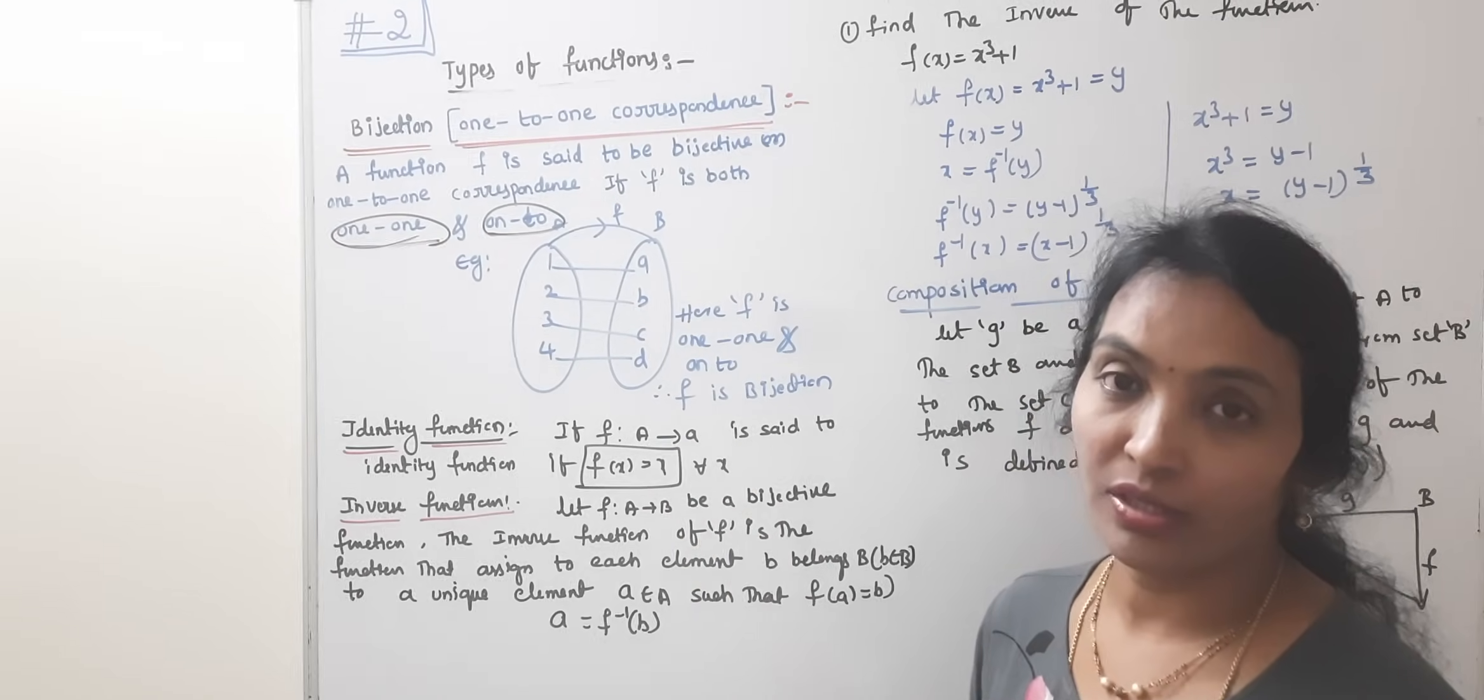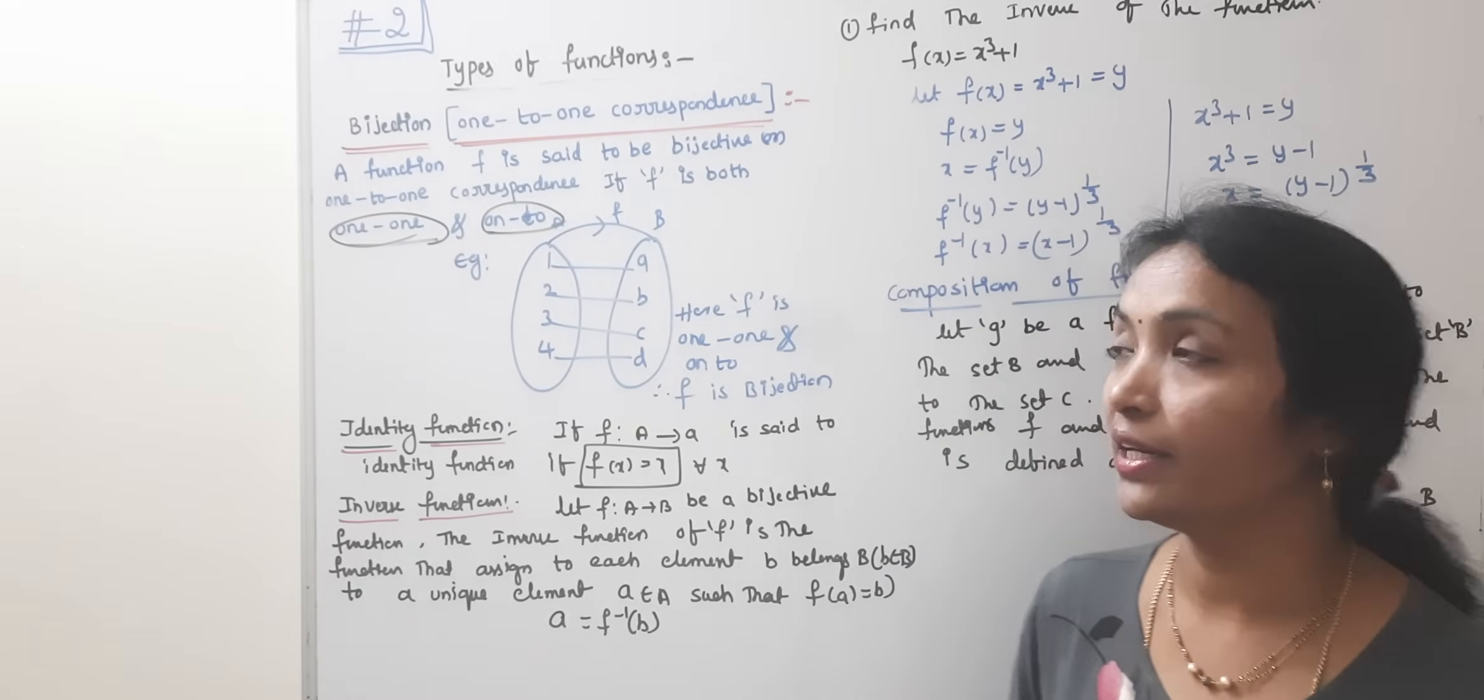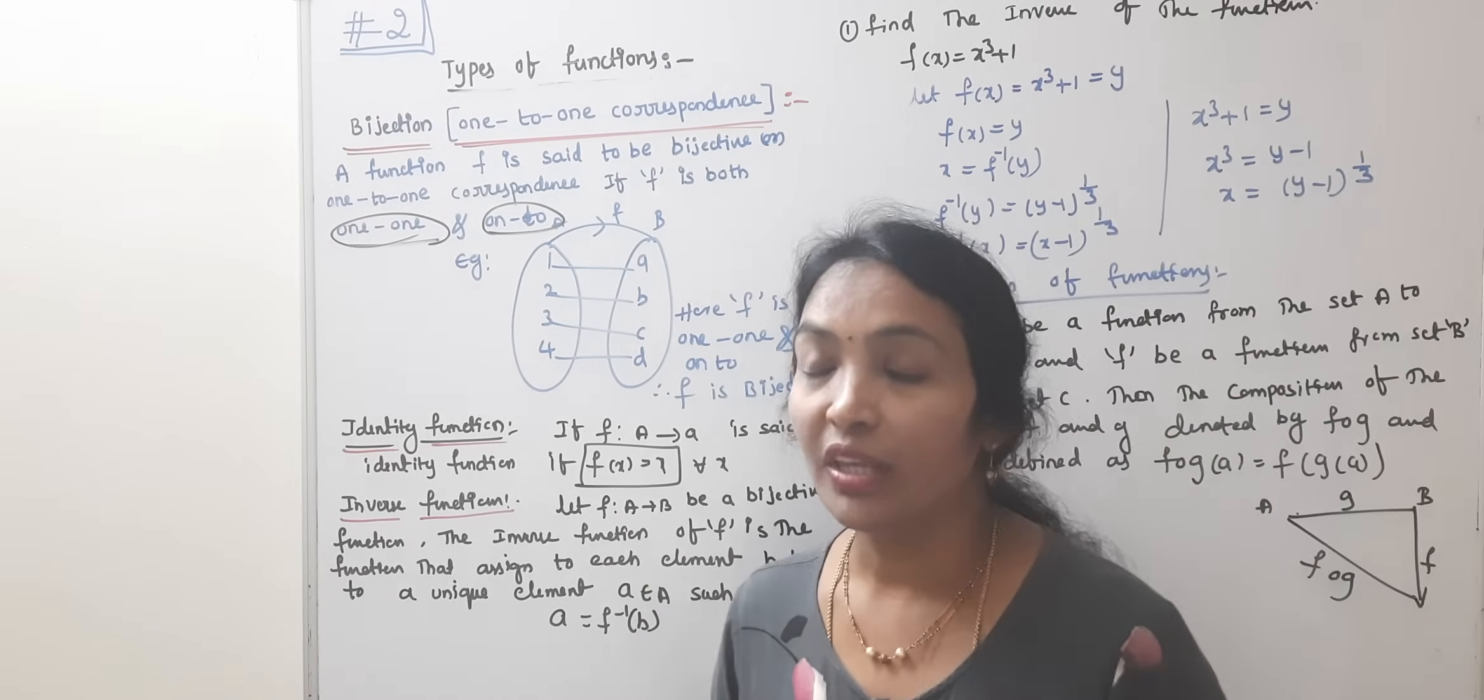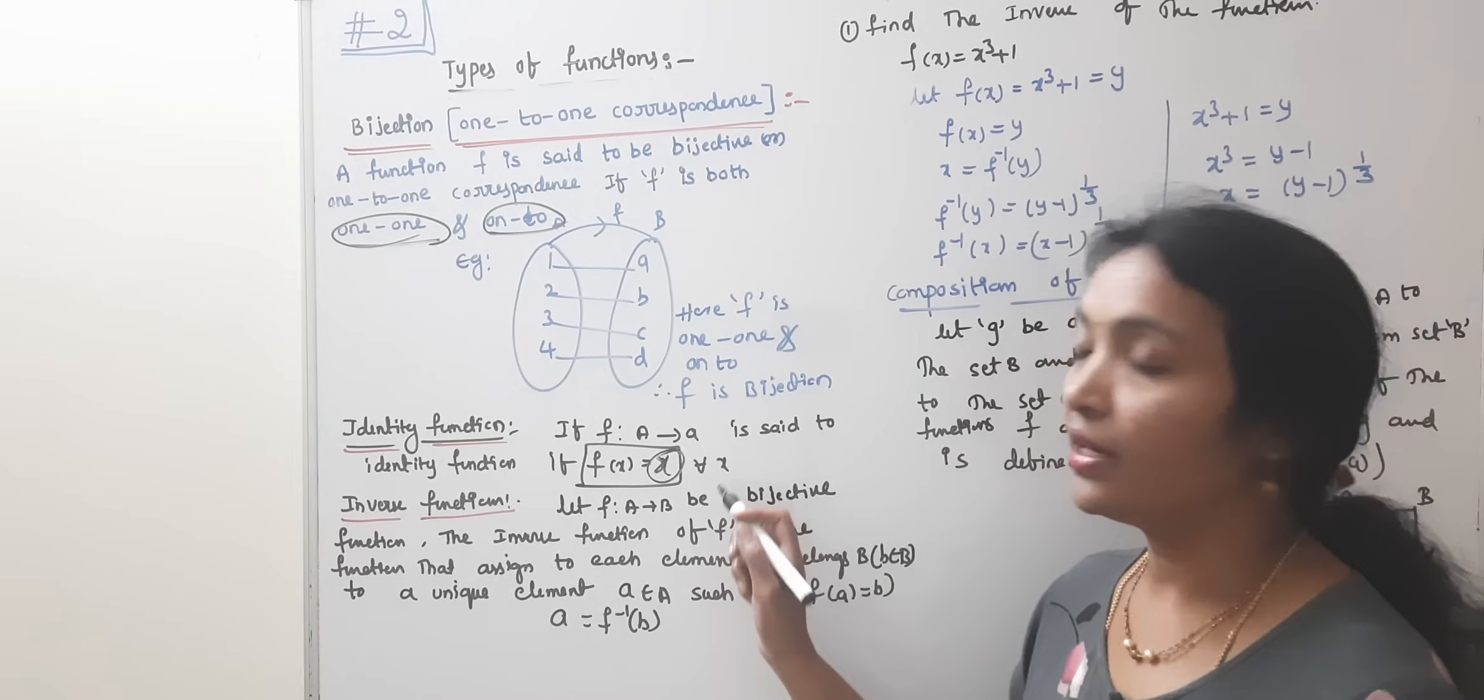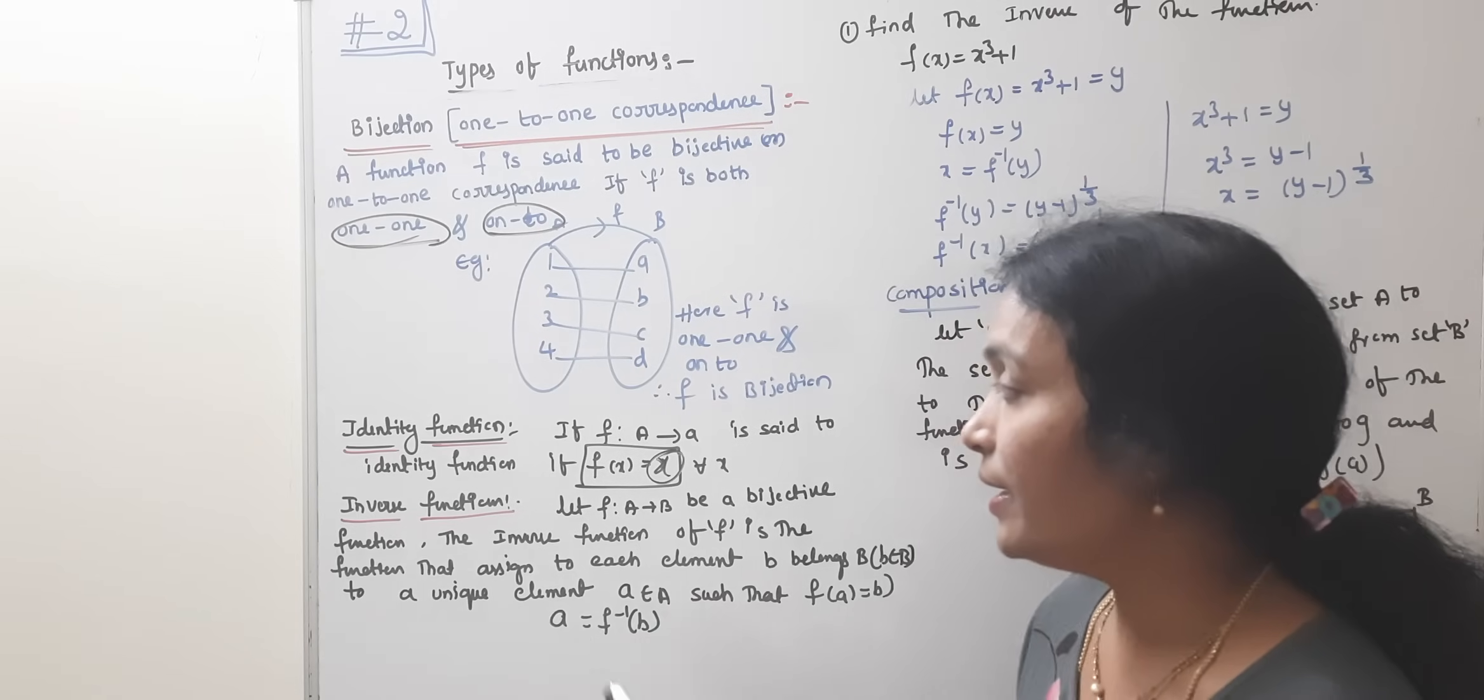Identity function: A function from A to A is said to be identity if you multiply with any element or any identity, then you will get the same result x. That is called the identity function, where A times I equals A.